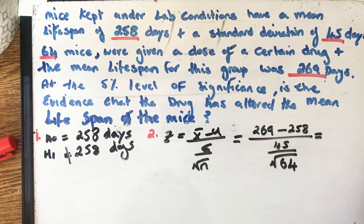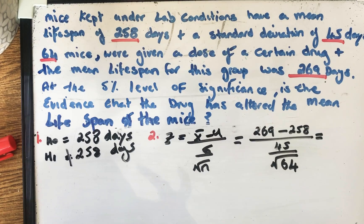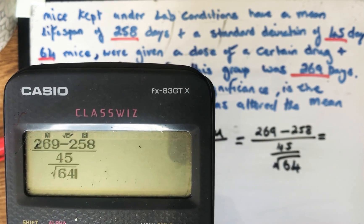Next of all, we're going to go to our calculator and we'll type it in exactly as we see it. So 269 minus 258 all over 45 all over root 64. So you can see here, I typed it in exactly as I have it over there.